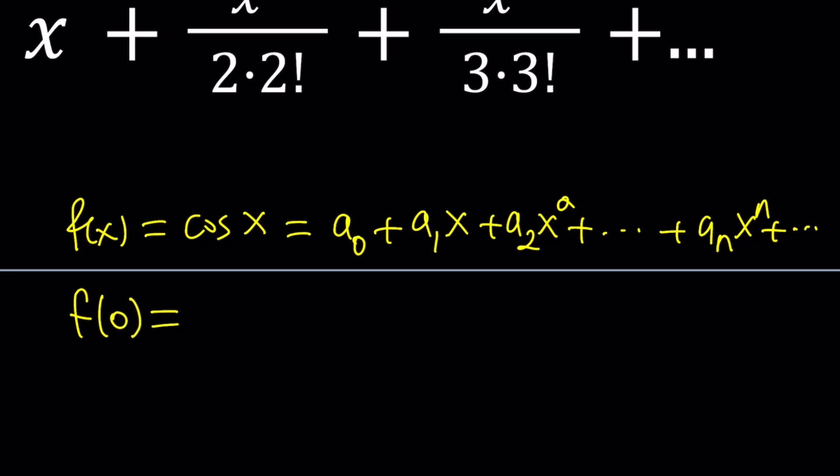And of course, you can replace x with 0 in two different places. For example, cosine 0 would be 1. You know that, right? From the unit circle. But on the right-hand side, in the infinite polynomial case, everything that has x in it will disappear. That's what's really cool about 0.